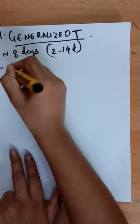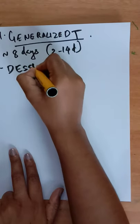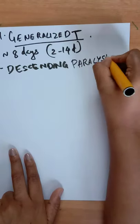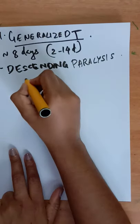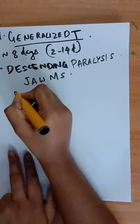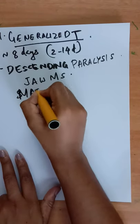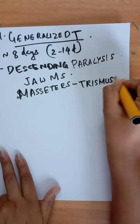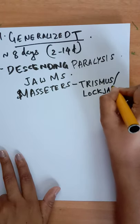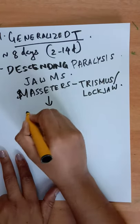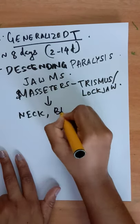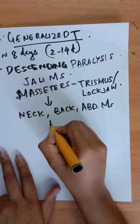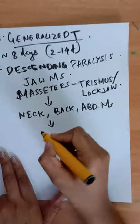About the clinical features: there is descending paralysis with initial involvement of the jaw muscles and spasm of muscle eaters that can lead to trismus or lockjaw. It then involves the muscles of neck, back, abdominal muscles, and later the whole body.